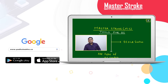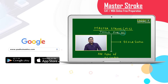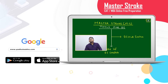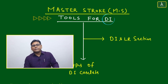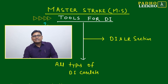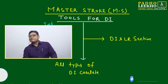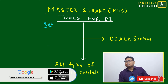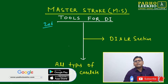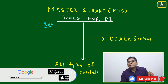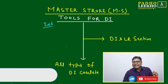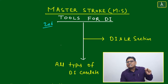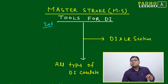Welcome to this session of Masterstroke, where we are going to discuss Data Interpretation — specifically, tools for DI. Tools for DI is your second challenge. The first challenge is how to classify the DI case slate, which we have already seen in a previous Masterstroke. Handling the DI case slate requires taking care of two challenges.